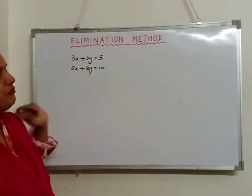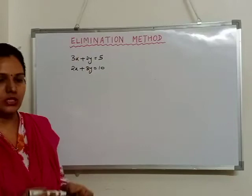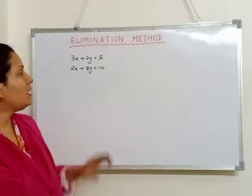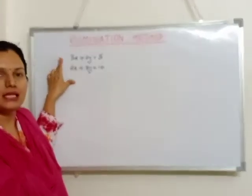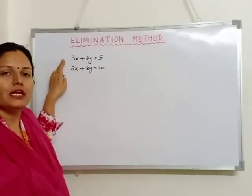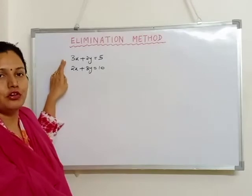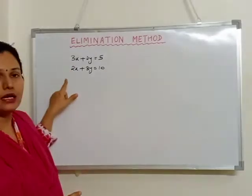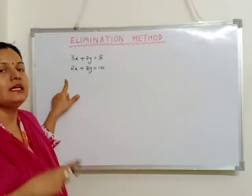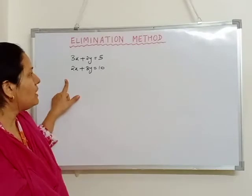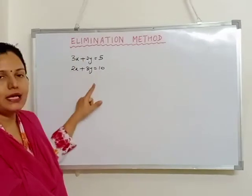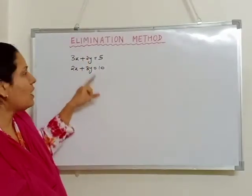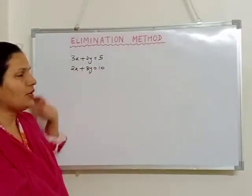These are the two different equations. Now if I want to eliminate the variable x, I have to take the coefficient of x only — that means 3 and 2. These are the coefficients. If I want to eliminate y, I have to take the coefficient of y — that means 2 and 3.